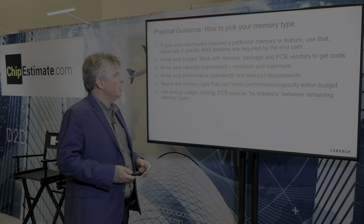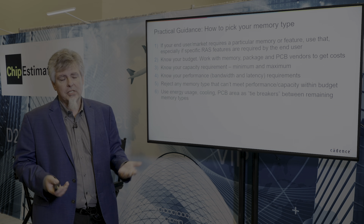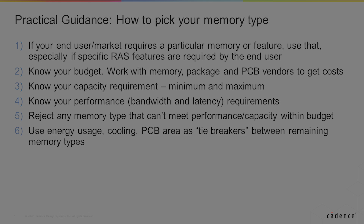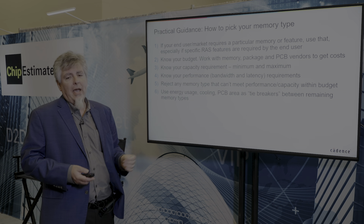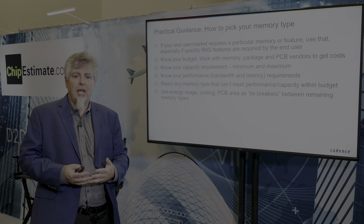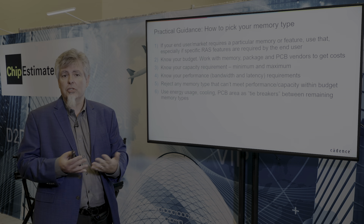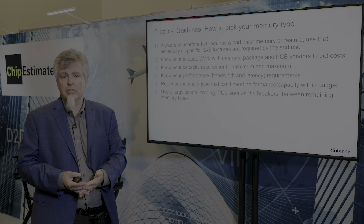Let's look at a quick summary — a framework for how to pick your memory type. First, if your end market requires a particular kind of memory, choose that memory. If everybody in the market space requires DDR5 and you need it for the reliability features, then just use DDR5. But if you do have an open choice, the next thing is to consider your budget, and work with your memory package and PCB vendors to understand those costs — especially if you're considering an HBM solution where you have to factor in the cost of an interposer.